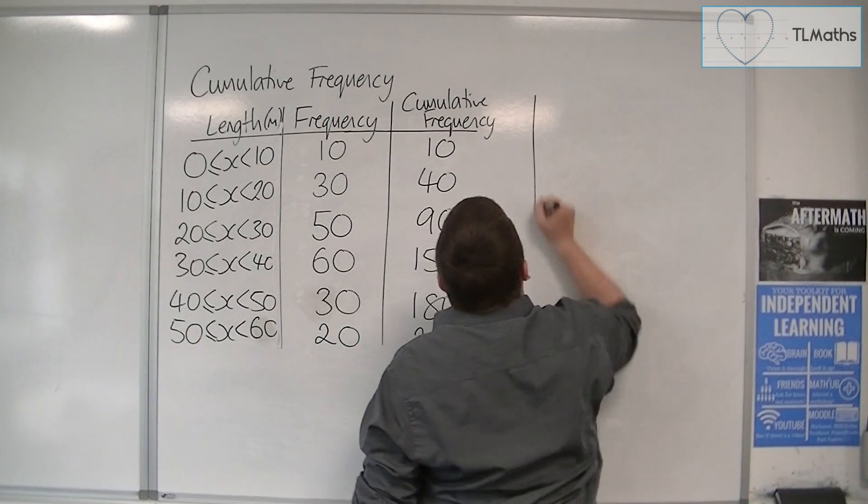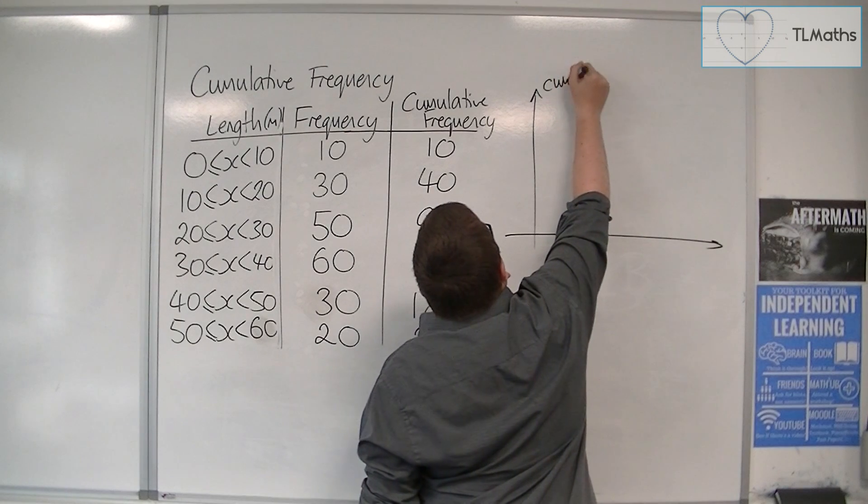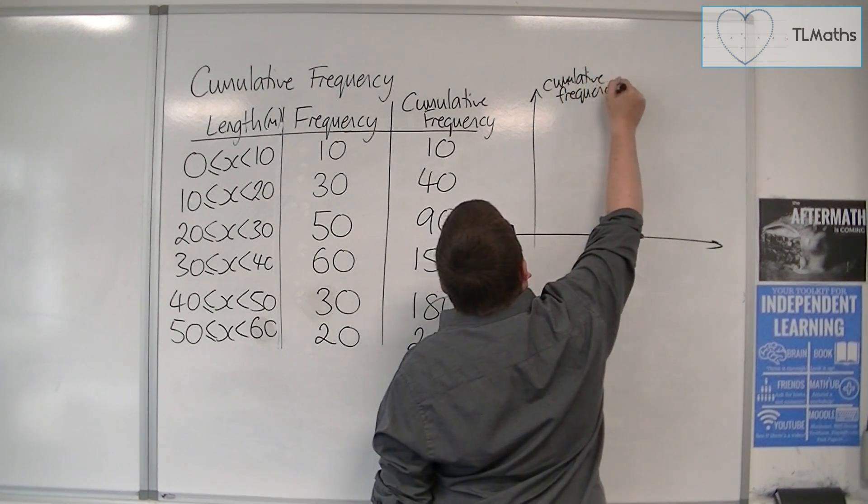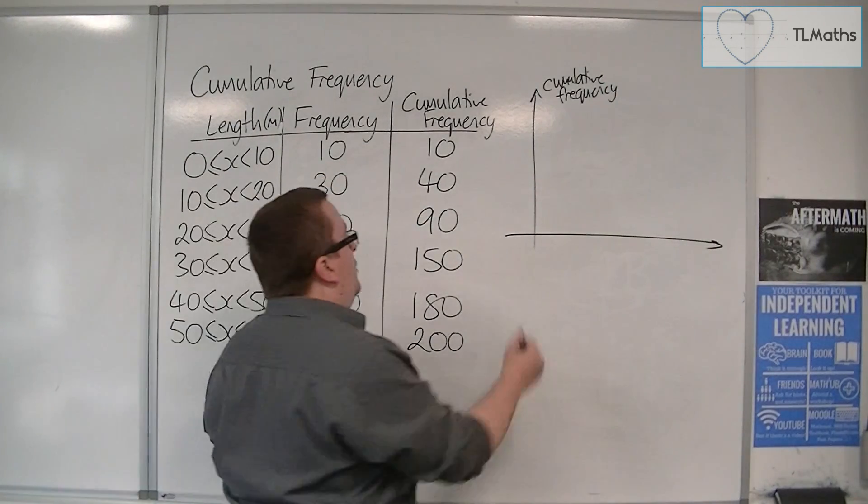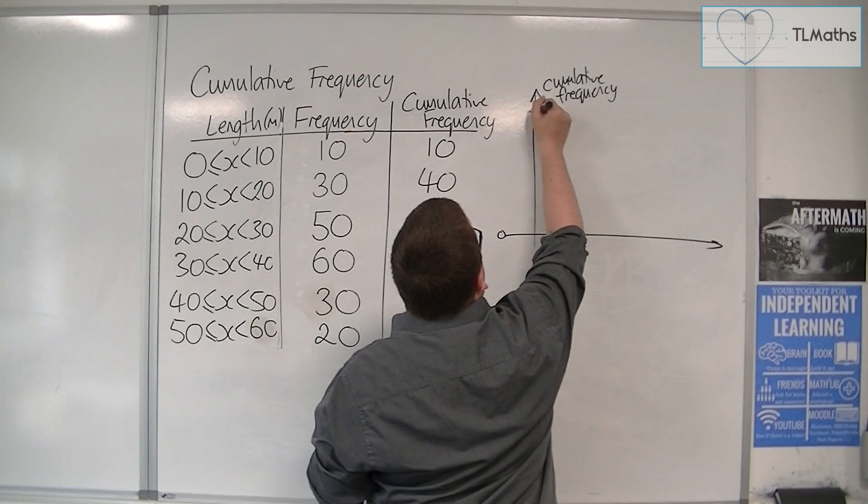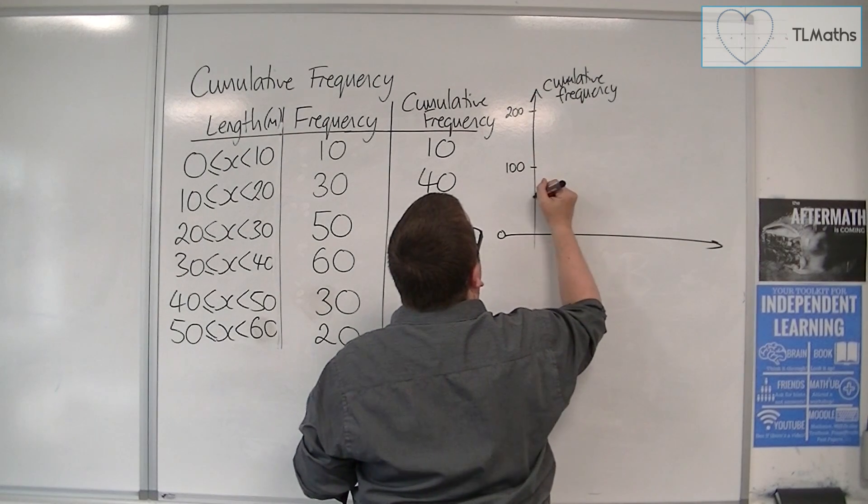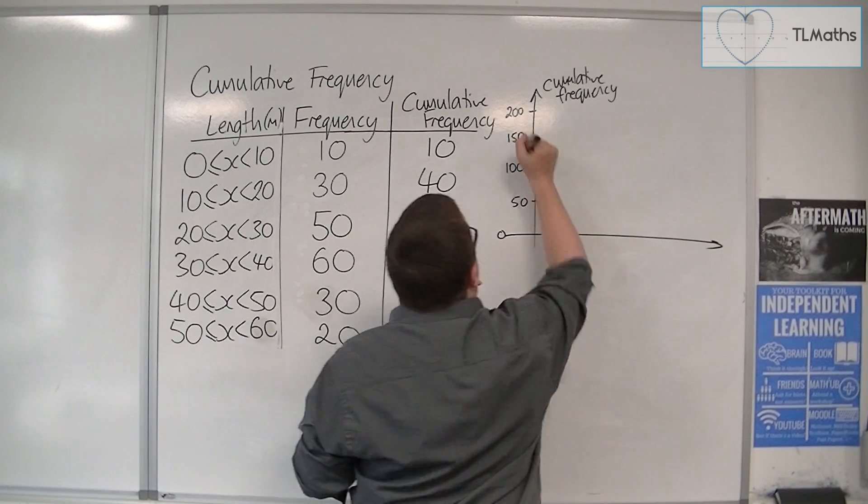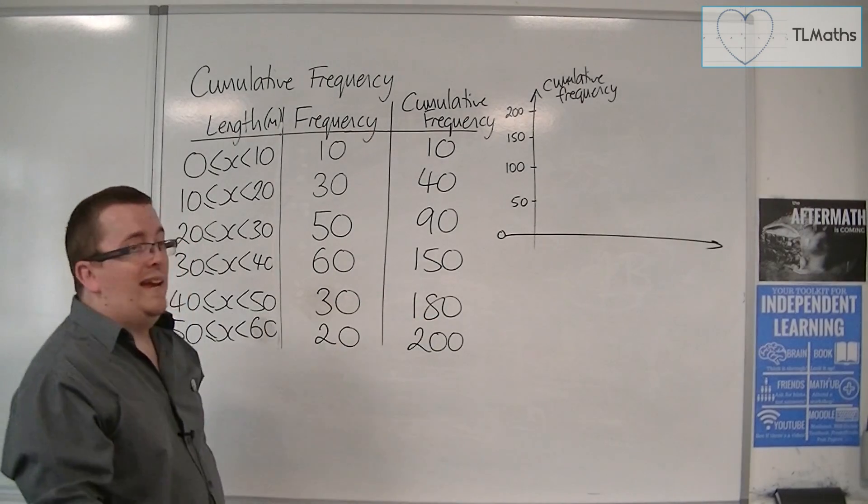So we would have a vertical axis, the cumulative frequency, and we can see the cumulative frequency is going all the way up to 200. So we'd start at 0, and we go all the way up to 200. So if we put 100 there, there's 50, there's 150, and along the bottom we can put length.